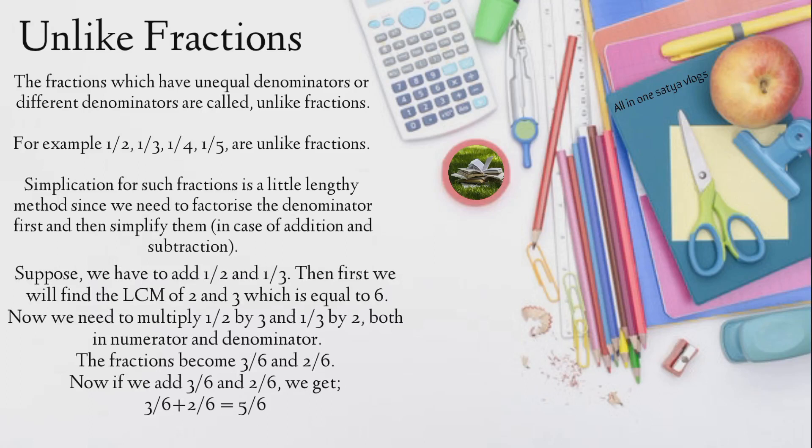Now, we need to multiply 1/2 by three and 1/3 by two, both in numerator and denominator. The fractions become 3/6 and 2/6. Now, if we add 3/6 and 2/6, we get 3/6 + 2/6 = 5/6.